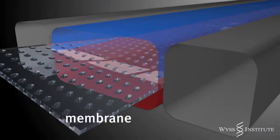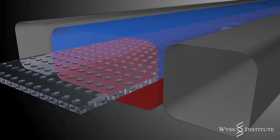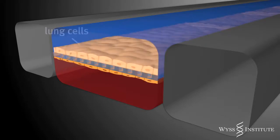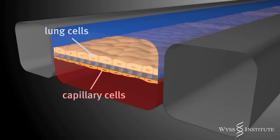A porous, flexible membrane separates the two channels at the center of the device. The opposite sides of the membrane are lined by human lung and capillary blood vessel cells. This mimics the arrangement of lung and blood vessel cells in the air sac of the lung.